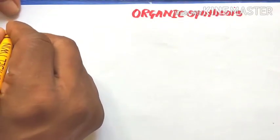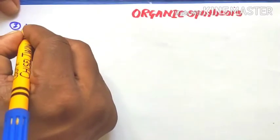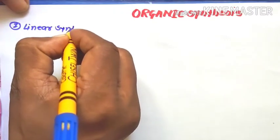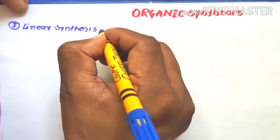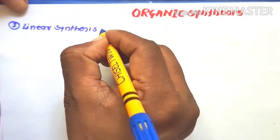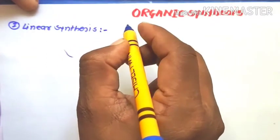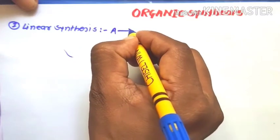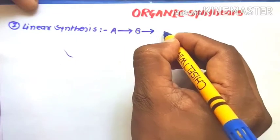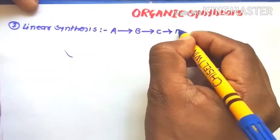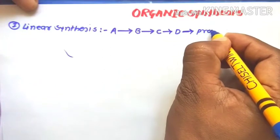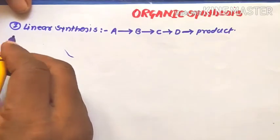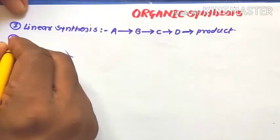The first type of reaction proceeds through linear synthesis. In linear synthesis, there is a stepwise conversion — component A is converted into component B, then B into C, then C into D, and so on to give the final product. This stepwise conversion is known as linear synthesis.